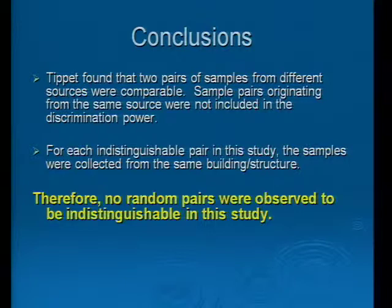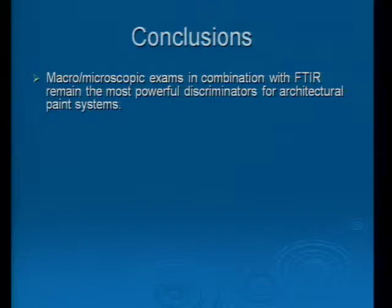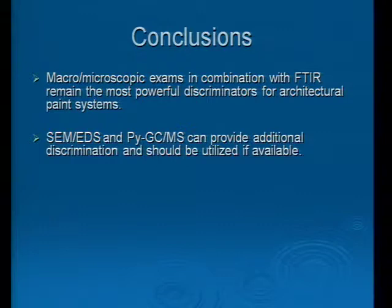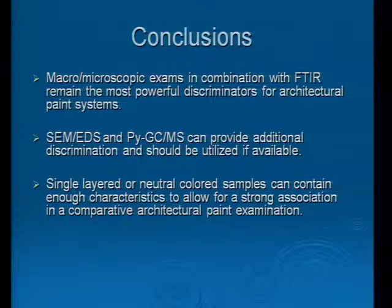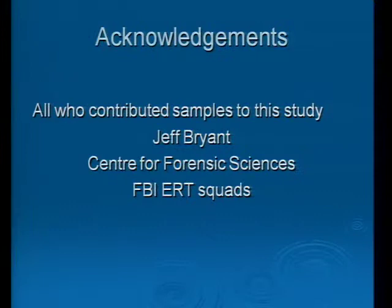In conclusion, macroscopic and microscopic exams in combination with FTIR remain the most powerful discriminators — I don't think anyone's really surprised to hear that. SEM and PyGCMS can provide additional discrimination and should be utilized; it saved us in the case of that 10-layer system where we definitely needed backscatter to elucidate those layers. Single-layered or neutral colored samples can contain enough characteristics to allow for a strong association in a comparative architectural paint exam. We'd like to acknowledge everyone who submitted samples to this study, particularly Jeff Bryant and the Center for Forensic Sciences, and I'd also like to thank Andrea for getting us going on this project — I really think it will be a benefit to the community.